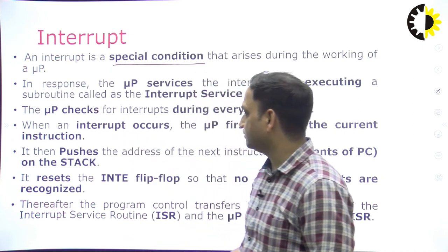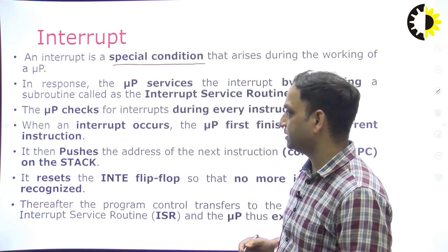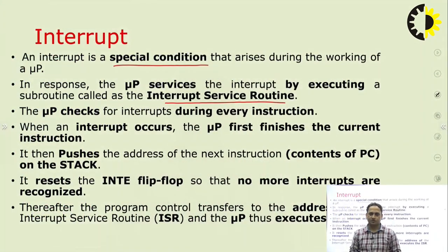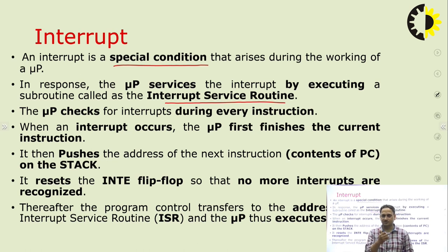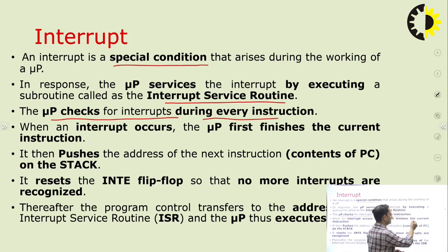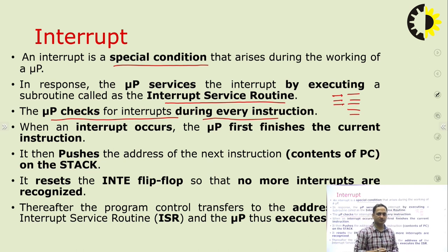In response to an interrupt, the microprocessor services the interrupt by executing a subroutine called the interrupt service routine — in short, the ISR. These are small programs which execute after the microprocessor executes its own instruction and an interrupt occurs. The microprocessor first executes its main instruction in process, and after that the ISR is executed. ISRs have their own different addresses through which we call that subroutine. The MUP checks for interrupts during every instruction.